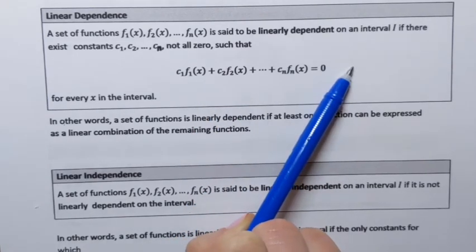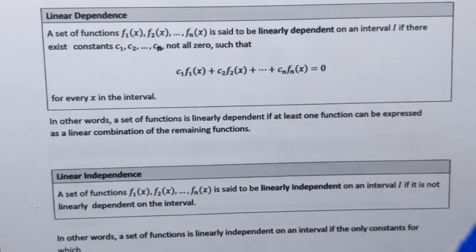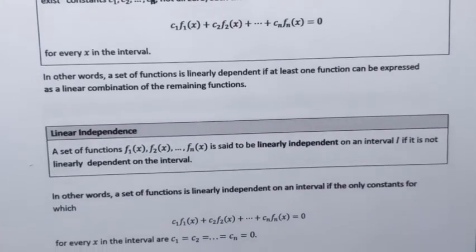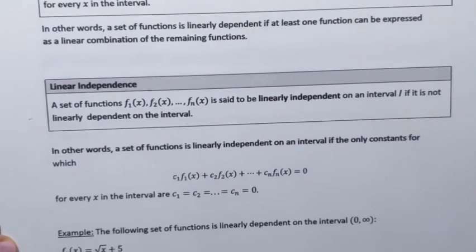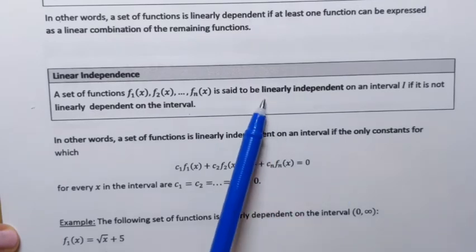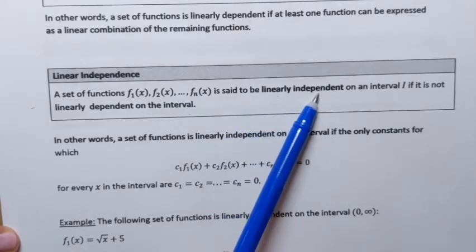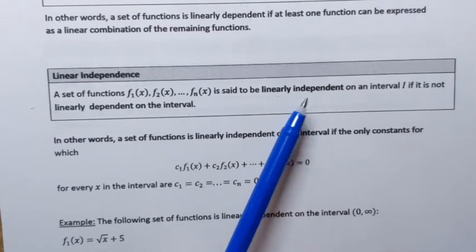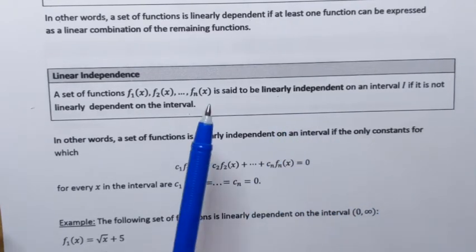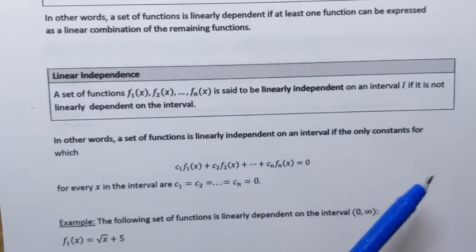So that's what linear dependence is. Now what is linear independence? We say that a set of functions is linearly independent if it's not linearly dependent. So a set of functions can be either linearly dependent or independent.